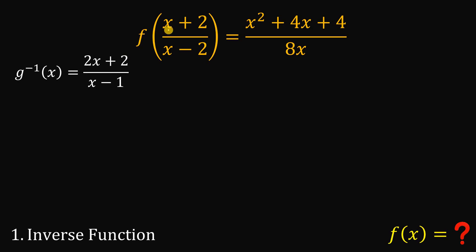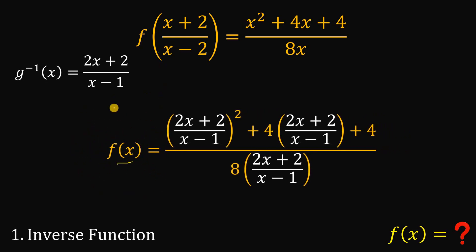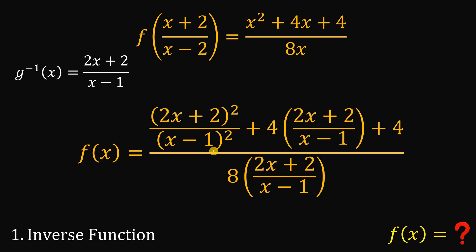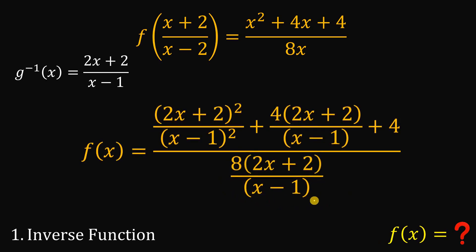Now we replace all x in our equation with g inverse of x, which is (2x+2)/(x-1). The left side, after applying the composition property, simplifies to just x. On the right-hand side, we have (2x+2)² over (x-1)² in the numerator, and related terms involving 4 and 8 in the denominator. We multiply numerator and denominator by (x-1)² to eliminate the compound fractions, canceling one factor of (x-1) in each term.